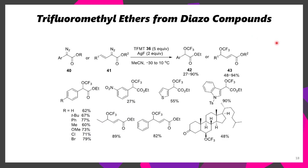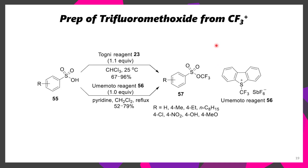If you're looking to functionalize alpha-diazoesters, it's possible to use silver catalysis with trifluoromethyl triflate or other alkoxide salts to install an alpha or even a gamma trifluoromethoxy group, in the case of vinylogous diazo compounds such as compound 43. If you're looking to generate these types of reagents but don't want to make trifluoromethyl triflate, it's also possible to take benzenesulfonic acids, treat them with Togni reagent or Umemoto reagent, and get a trifluoromethylsulfonate, which can be used for subsequent chemistry.